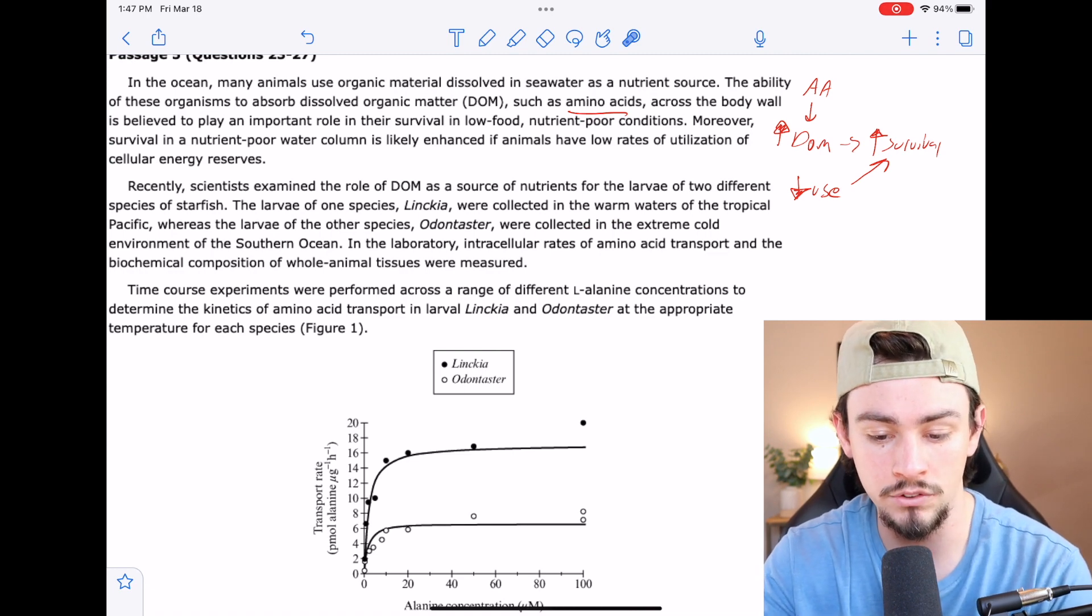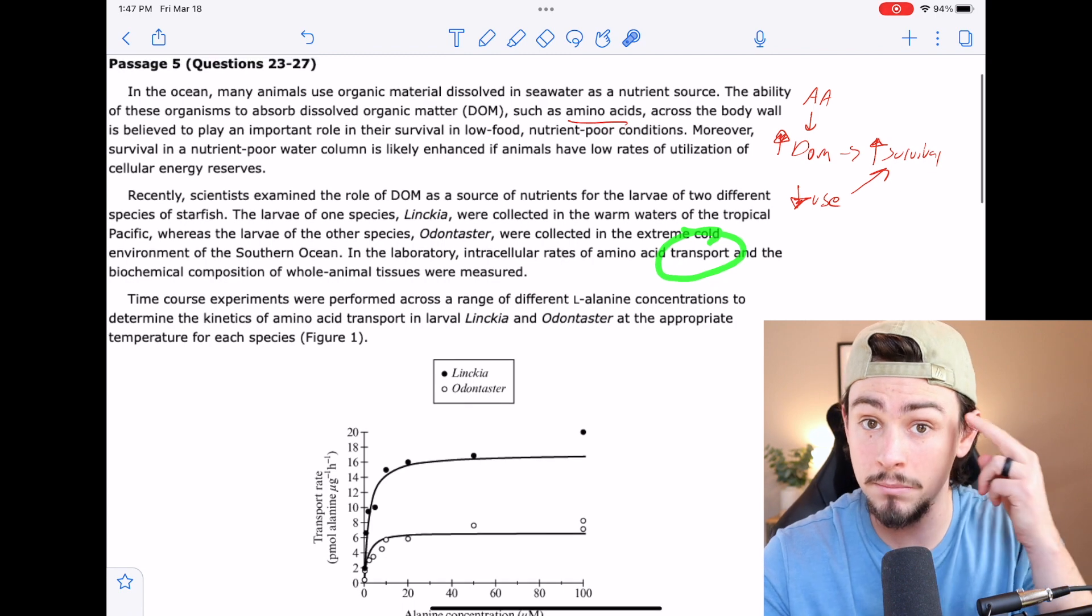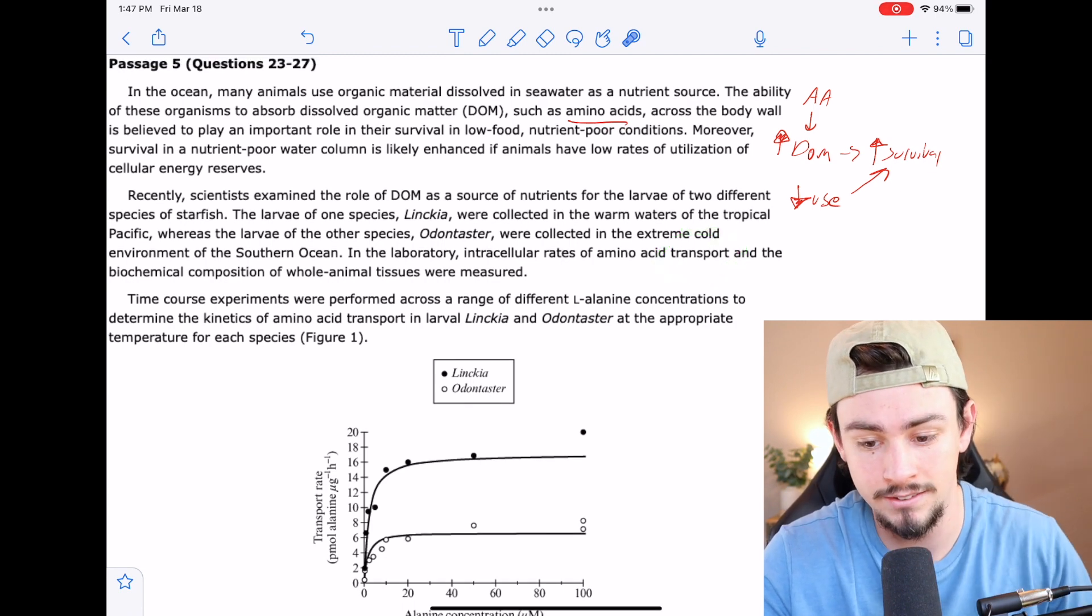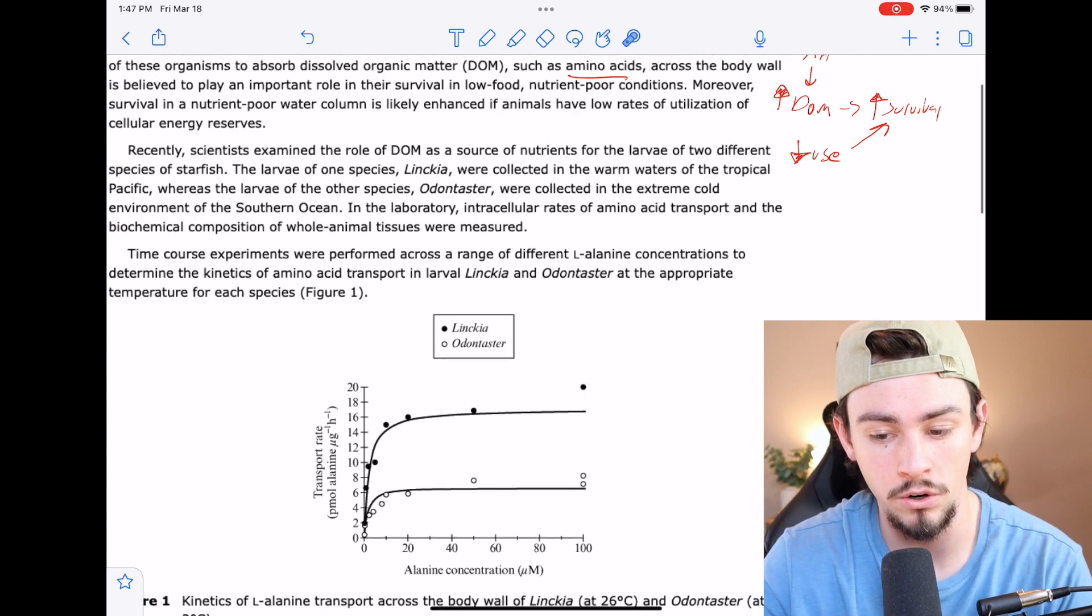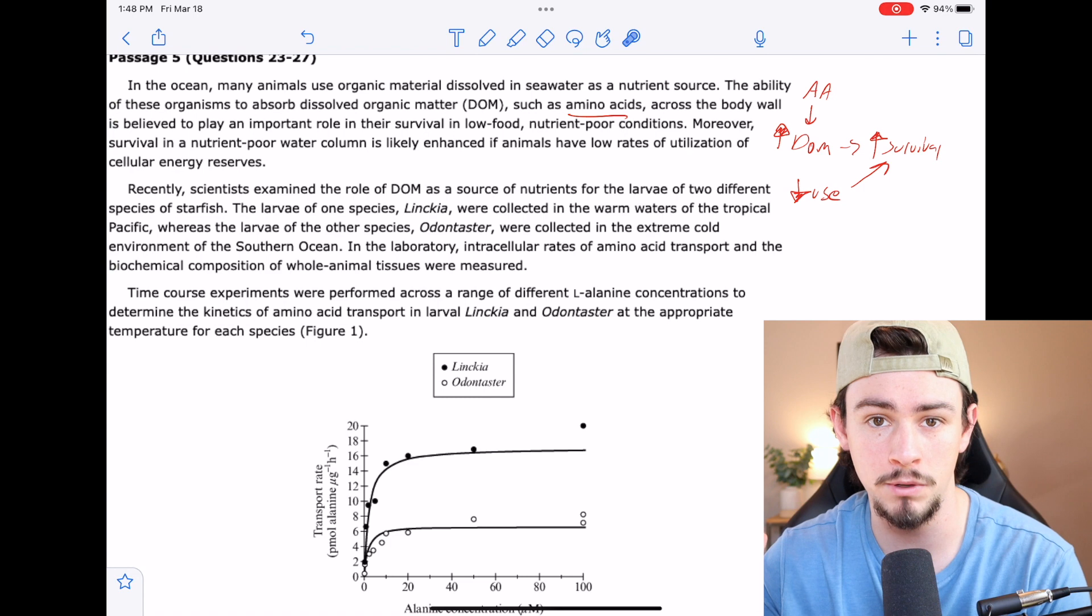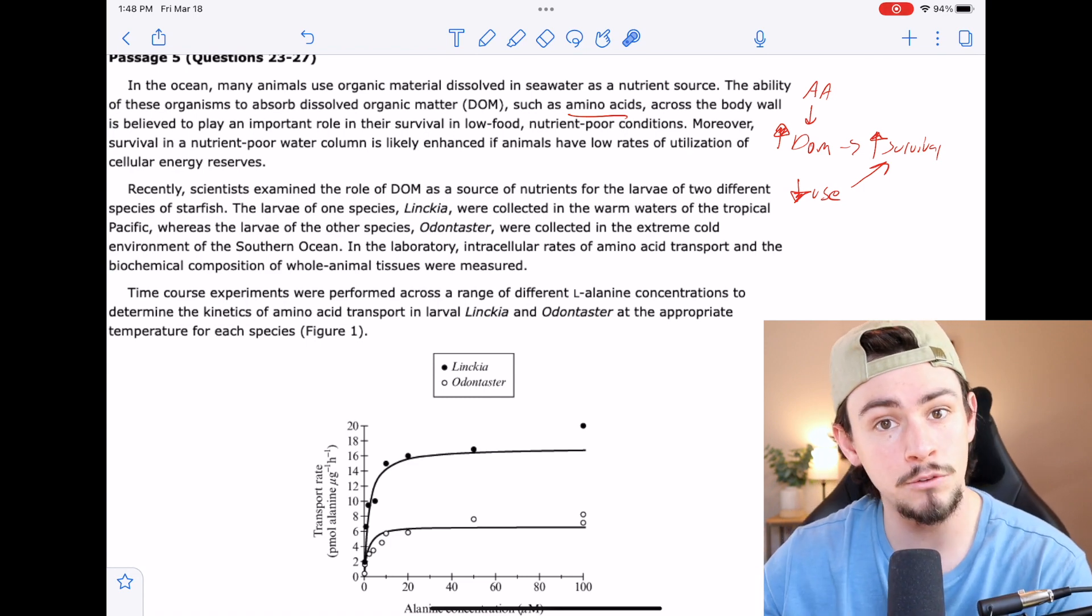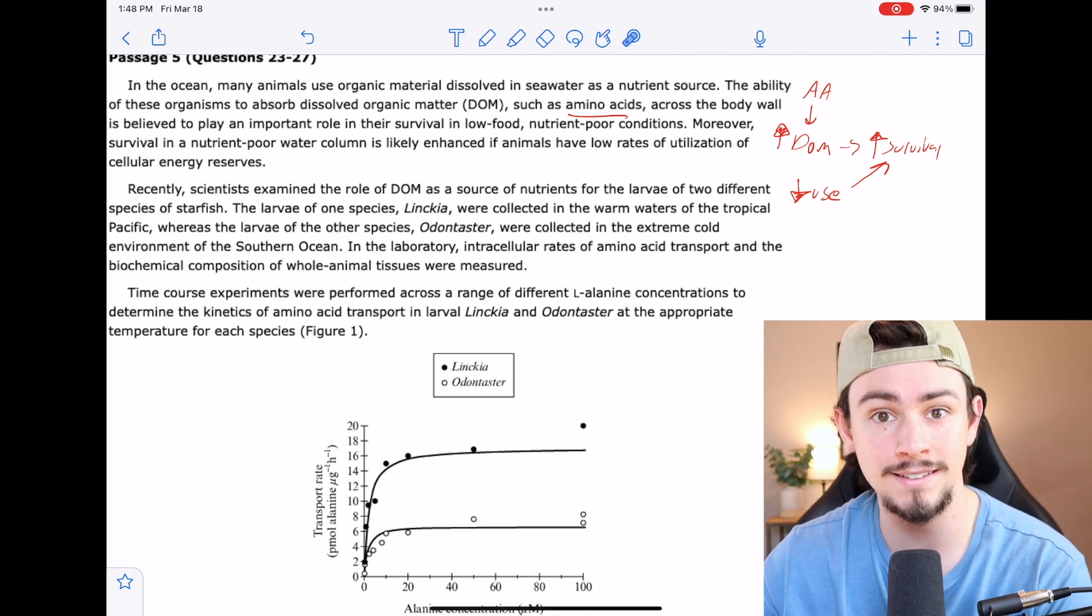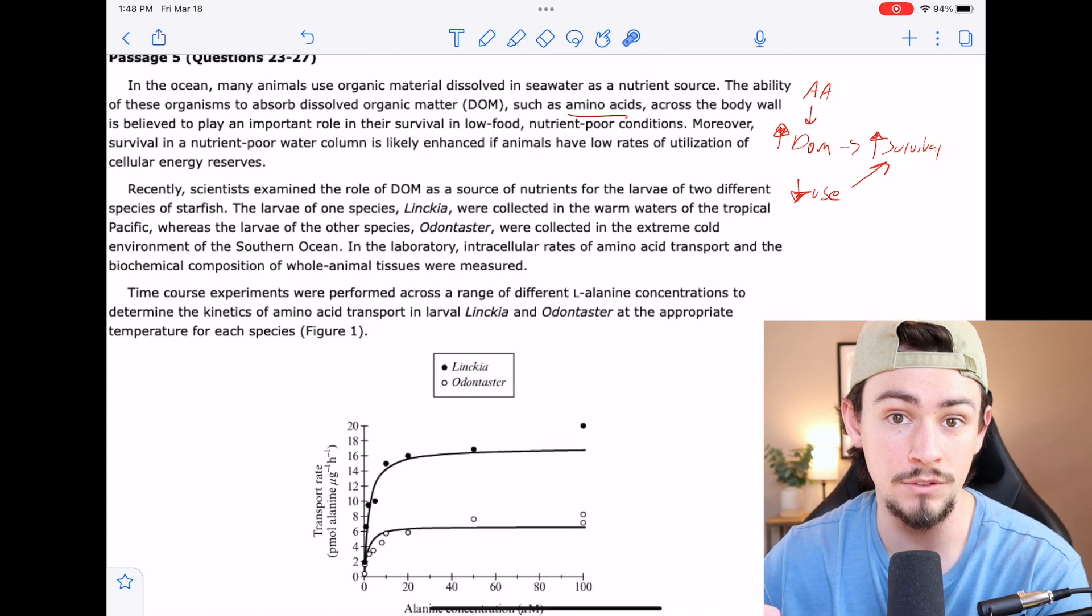It says, in the laboratory, intracellular rates of amino acid transport—okay, now we're talking about transport. That's kind of making my brain go along the lines of kinetics. And the biochemical composition of whole animal tissues were measured. Okay, there really wasn't a whole lot from there. They were just kind of setting up the experimental design for me and telling me what we're about to do. And so hopefully in the next paragraph, they're going to explain to us the sciences behind what they found and what they used to get there.